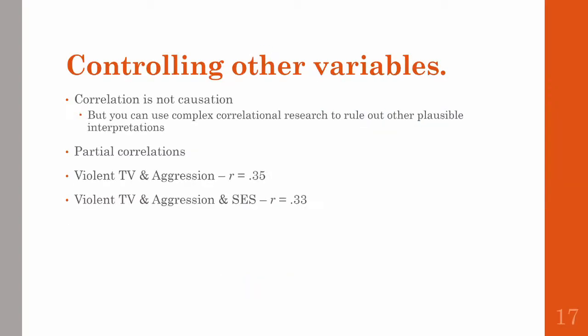While it's true that correlation does not imply causation, you can, in a way, use complex correlations to rule out other possible interpretations. With partial correlations, you can look at the relationship between variables while statistically controlling for another variable. A good example is looking at the relationship between watching violent TV and the amount of aggressive behaviors in a child.